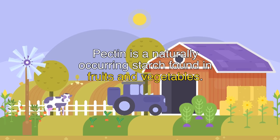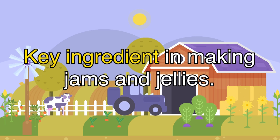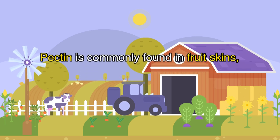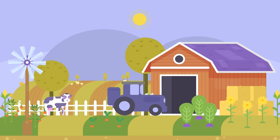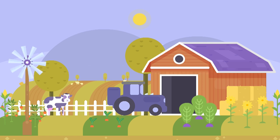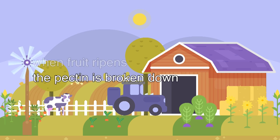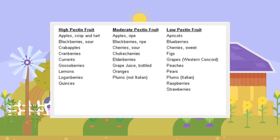Pectin is a naturally occurring starch found in fruits and vegetables, and it's also a key ingredient in making jams and jellies. Pectin is commonly found in fruit skins such as citrus peels like lemons and grapefruits. Other fruits high in pectin include apples and blackberries, whereas cherries and strawberries are low in pectin. When fruit ripens, the pectin is broken down and results in the formation of methanol. Here's a chart showing fruits based on their pectin levels.